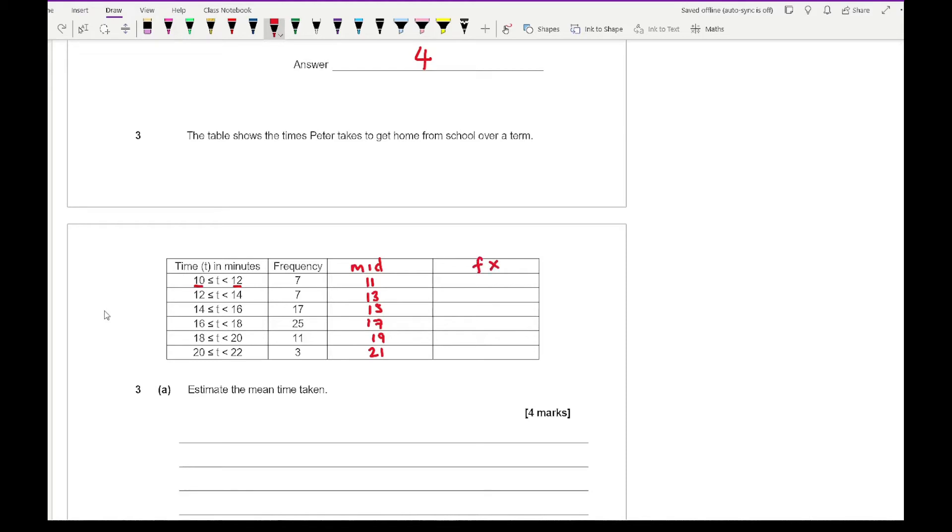The next thing for me to do is to work out our fx value, and that's done by multiplying the frequency by the midpoint, in which then you probably most likely have to use a calculator for this. So here we've got 7 times 11 which is 77, 7 times 13 which is 91, then we've got 17 times 15 which is 255, and 25 times 17 which is 425, 11 times 19 which is 209, and 3 times 21 which is 63.